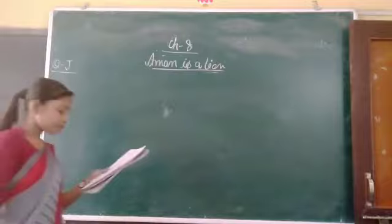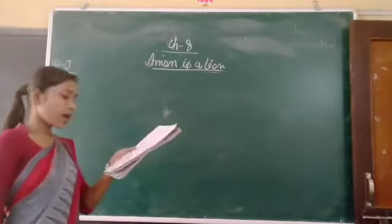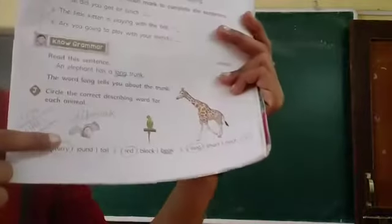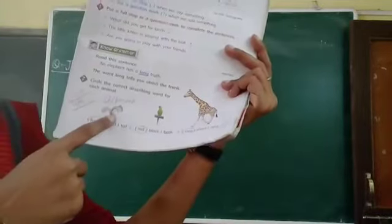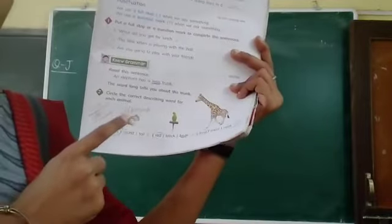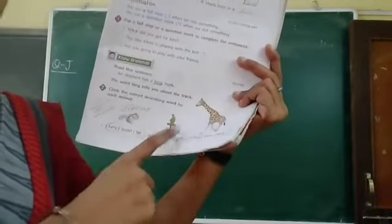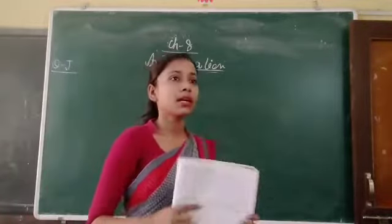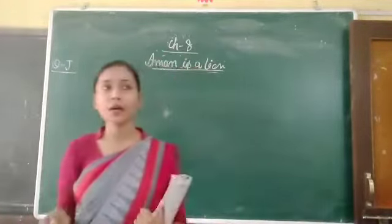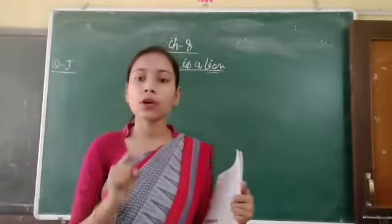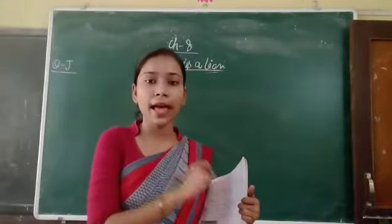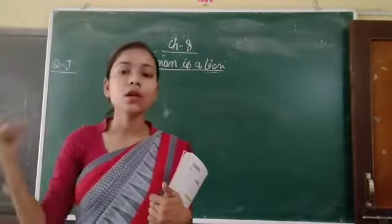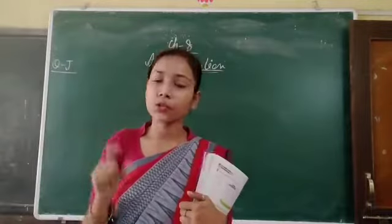In question J, we have three animals, as you guys can see. In these three animals, the first one includes a chipmunk, a squirrel, a parrot and a giraffe. What we have to do is, just like 'an elephant has a long trunk,' we have to identify and choose the perfect describing word for these animals too. The long was the describing word and the trunk was the noun.